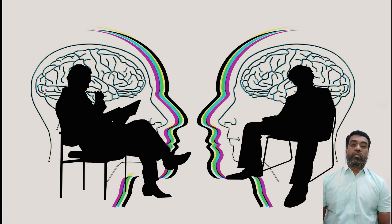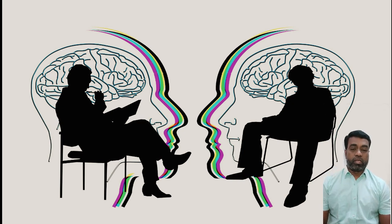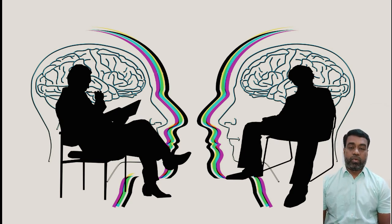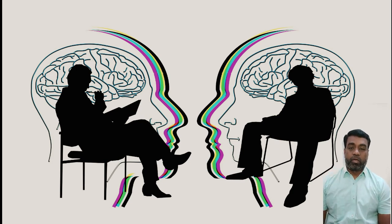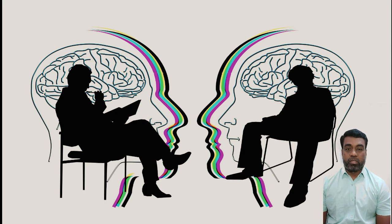Whenever a call is initiated from one mobile station to a subscriber located in the same or a different mobile station, we will look at what different signals are exchanged between the air interface or between network elements, how the signaling flow happens, and finally how the call gets connected. This is a much more interesting video as we will be discussing signaling information related to the voice call flow.